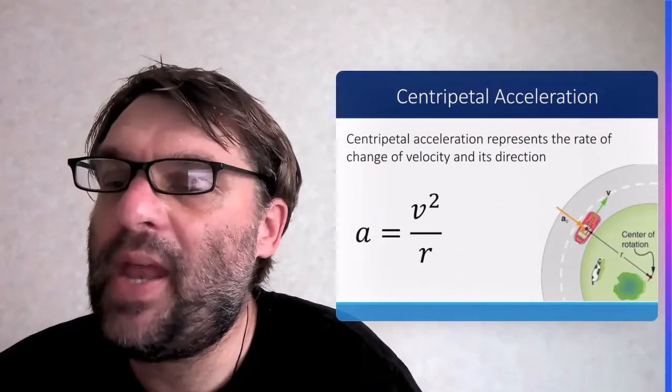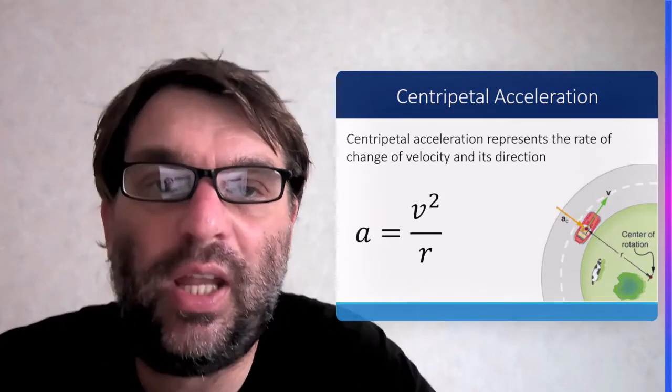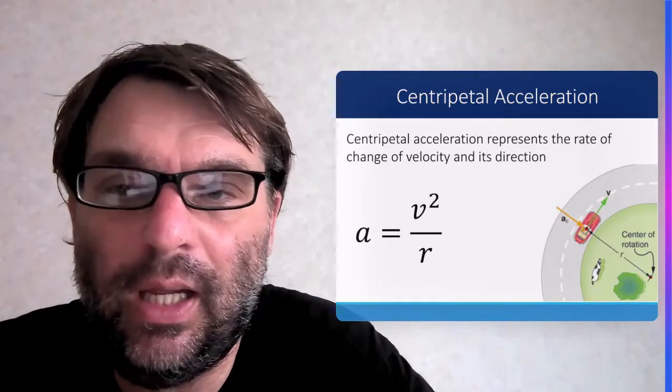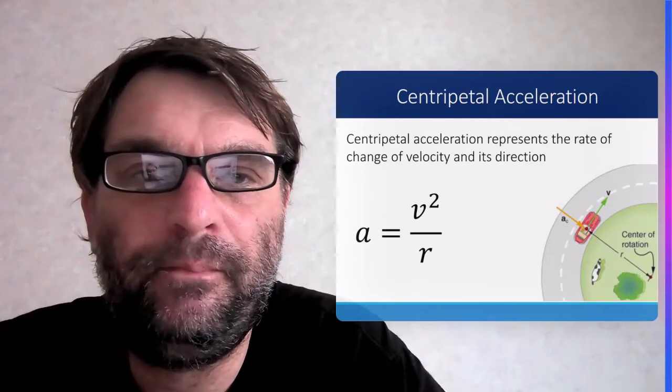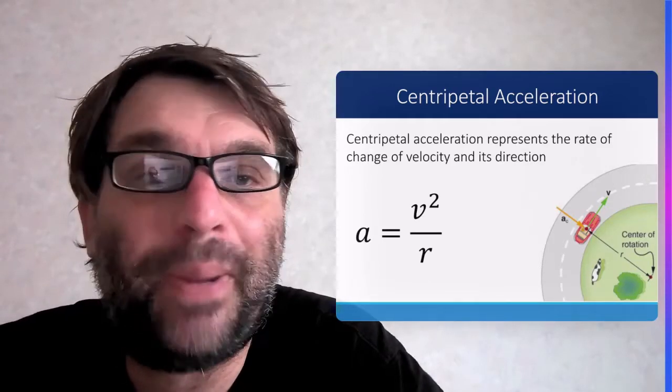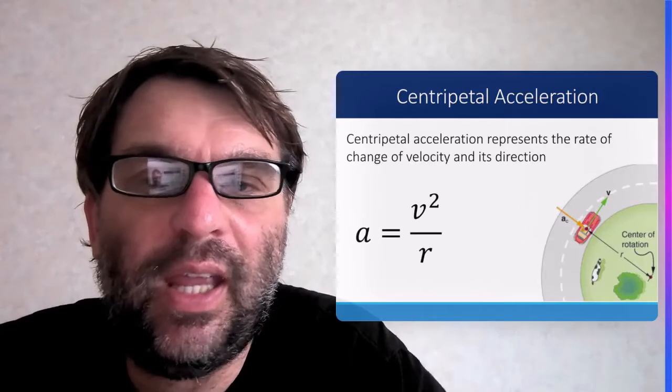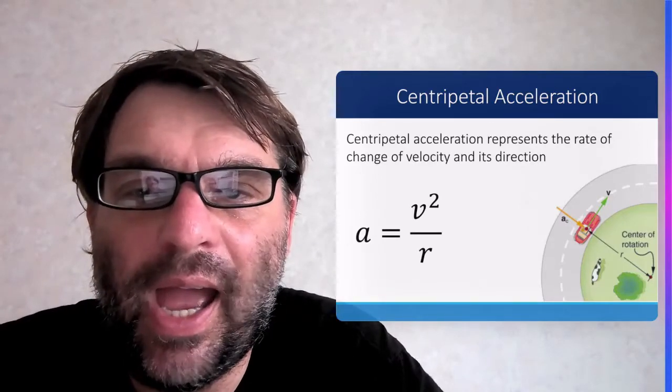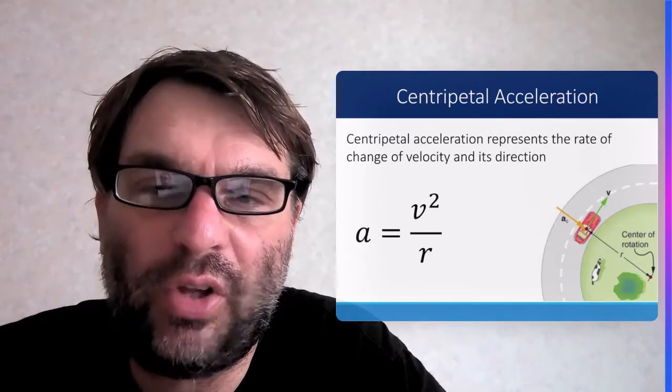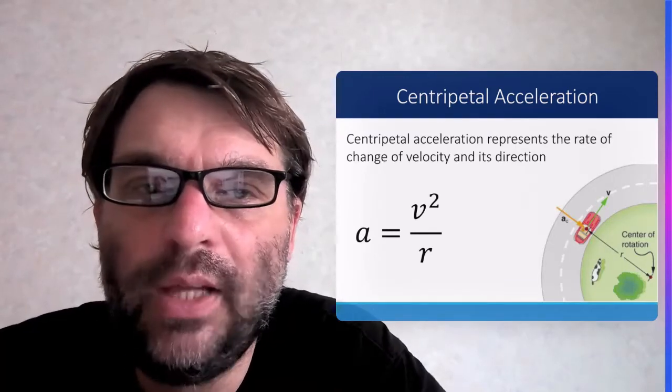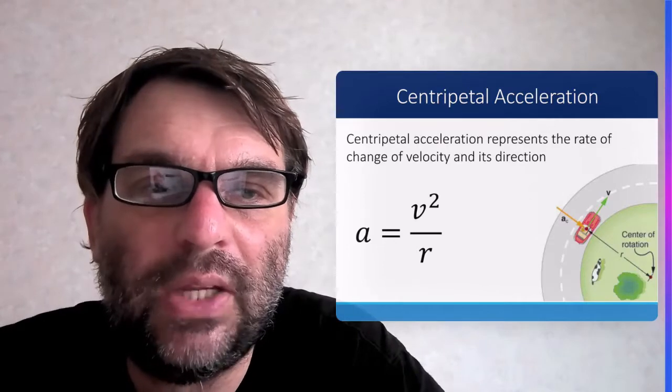And that acceleration is actually towards the center of the circle, and we'll explain why in the next slide. This is known as centripetal acceleration, and it's given the equation a_c, that C meaning centripetal, equals the tangential velocity squared divided by the radius.